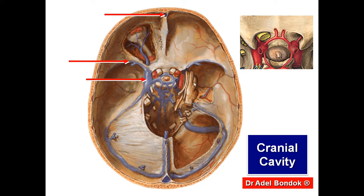The structures inside the cavernous sinus are the internal carotid artery and the abducent nerve.